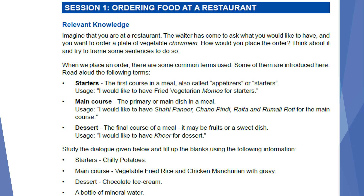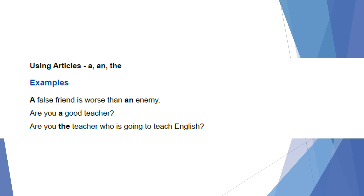Now we will also do an exercise using articles 'a' and 'the'. These articles we have been using since our childhood, so we will see them once again. Article 'a' is used before consonants — consonants are the non-vowel sounds. 'An' is used before vowels: a, e, i, o and u. The article 'the' is used to refer to a specific or particular noun. Examples: 'A false friend is worse than an enemy.' 'Are you a good teacher?' 'Are you the teacher who is going to teach English?'